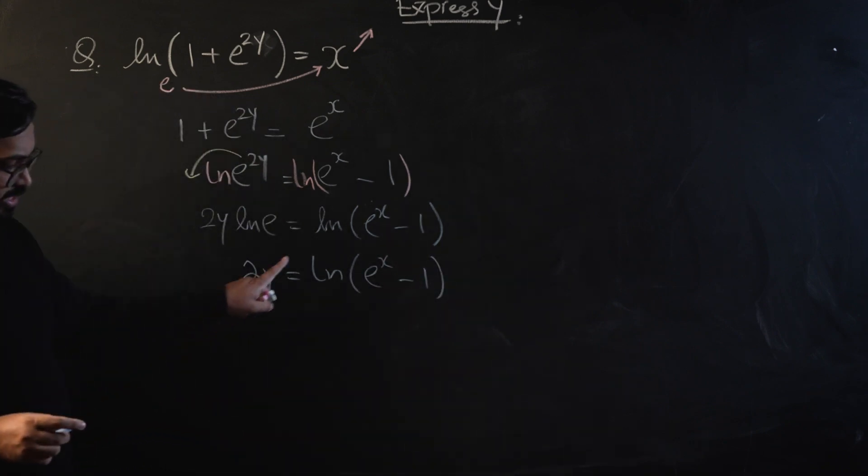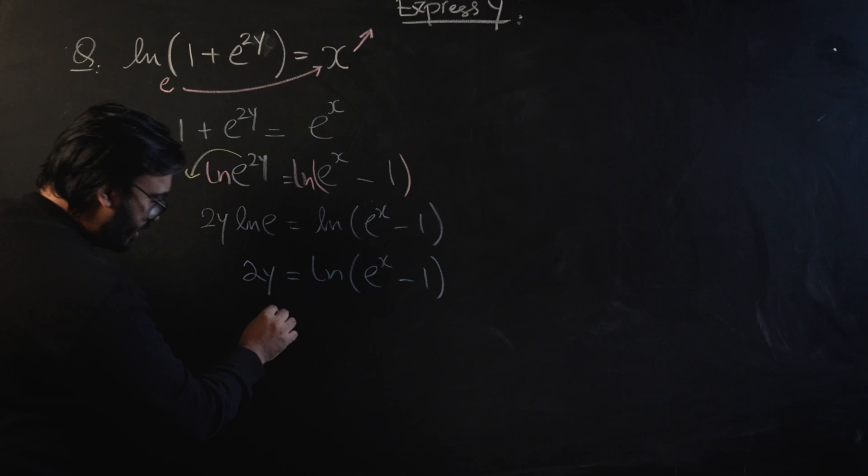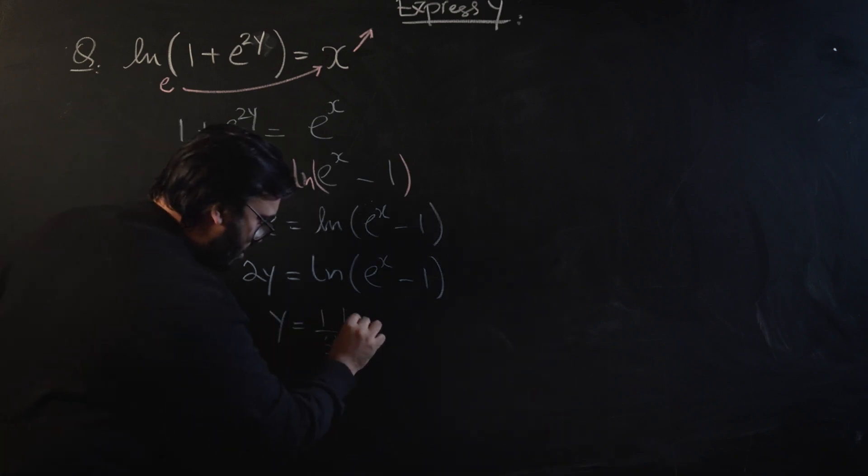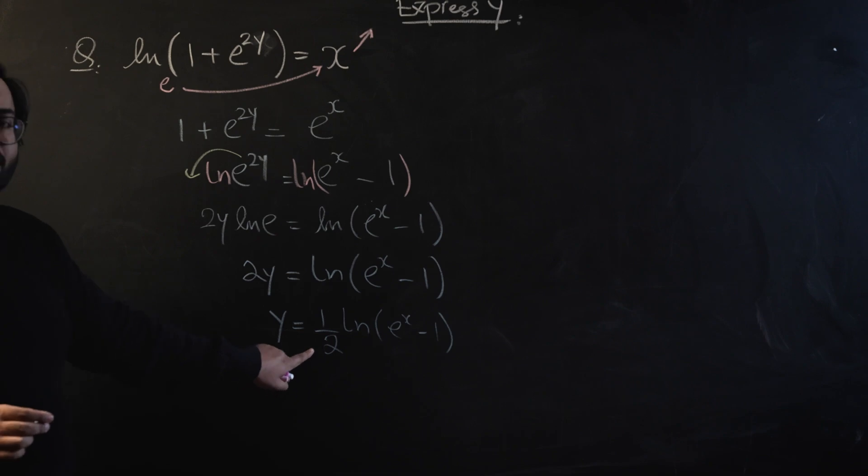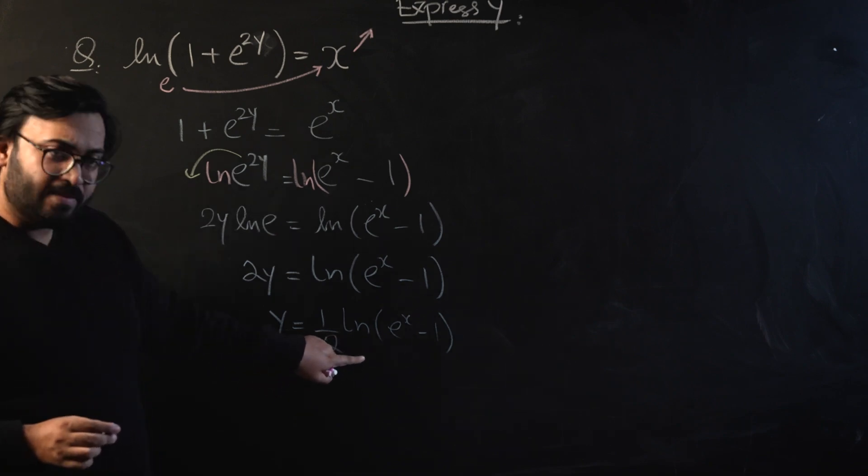On the left hand side will be 2y equals log of e raised to power x minus 1. Let's shift this 2 to the other side and it will become y equals 1 over 2 log of e raised to power x minus 1.